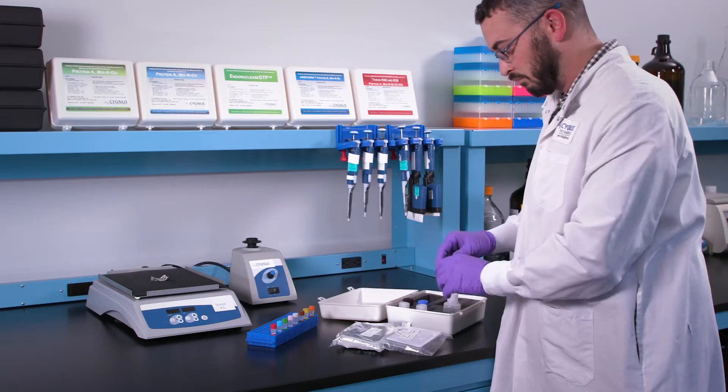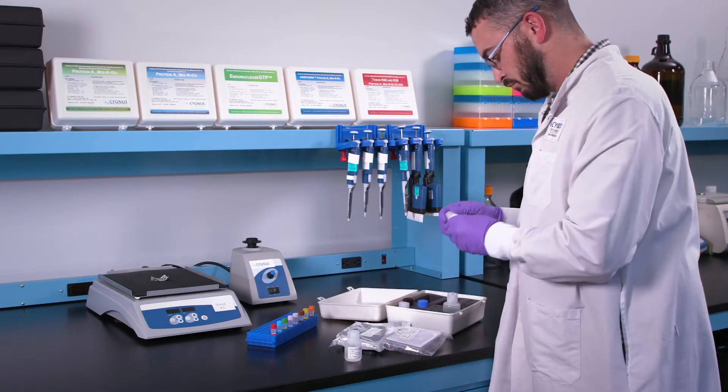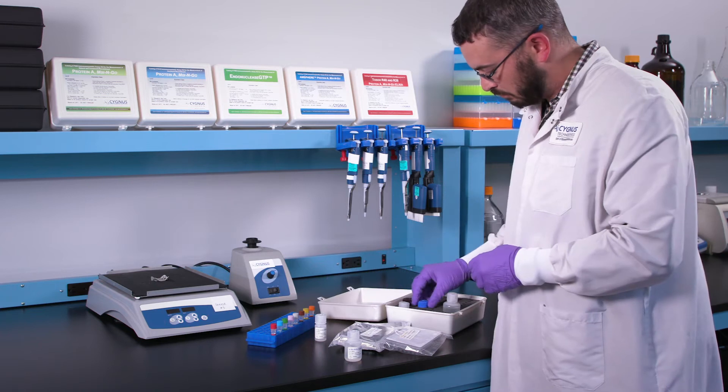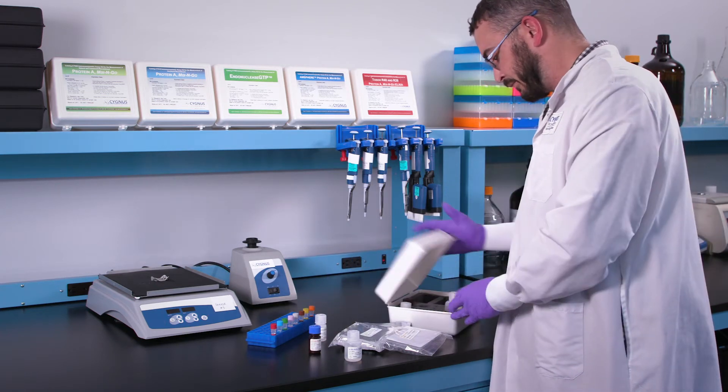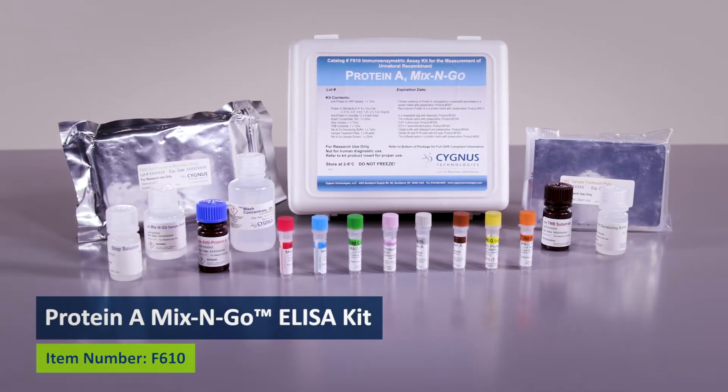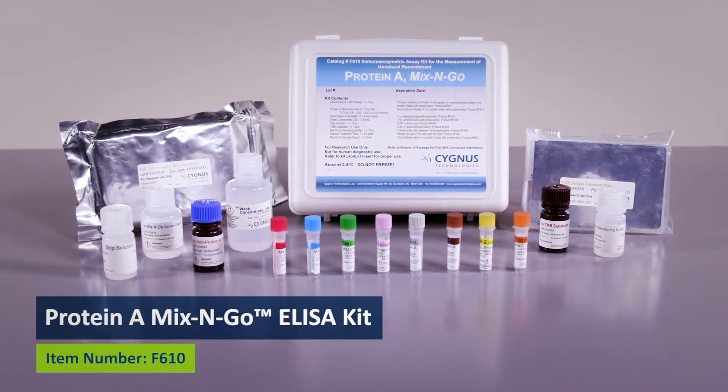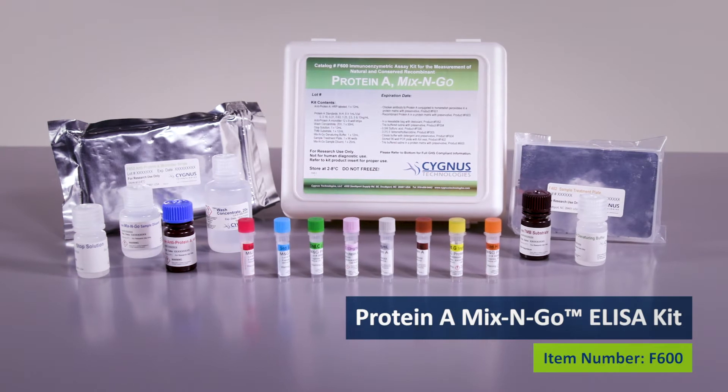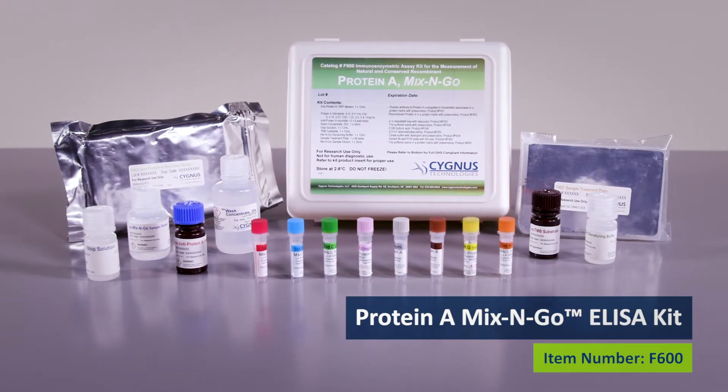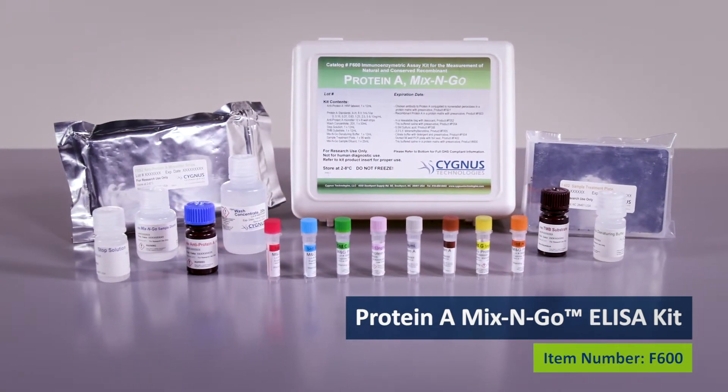For first-time users, we recommend trying our Mix & Go kits as they are the most robust and easy-to-use protein A kits on the market. The F610 uses standards calibrated to unnatural constructs such as MabSelect Sure, while the F600 uses standards calibrated to natural and conserved protein A.